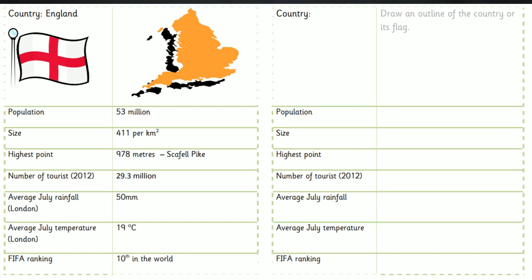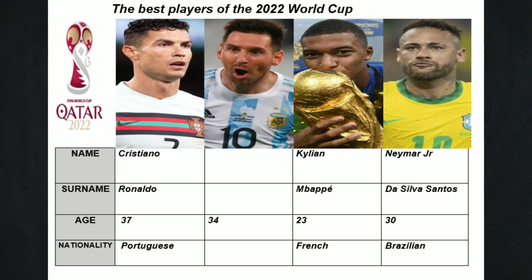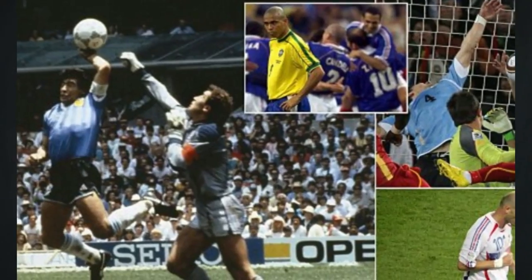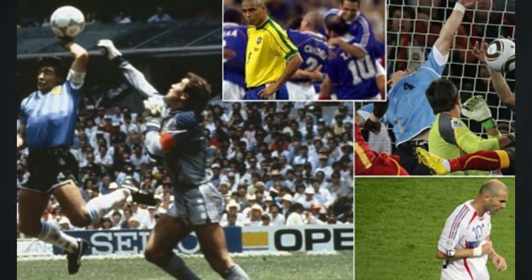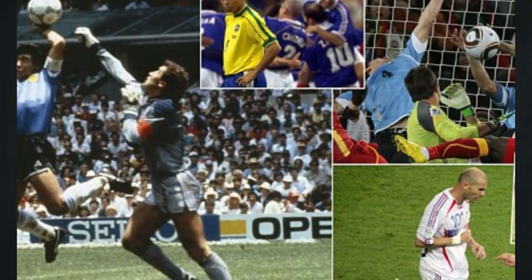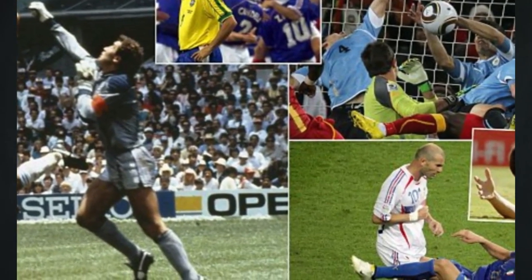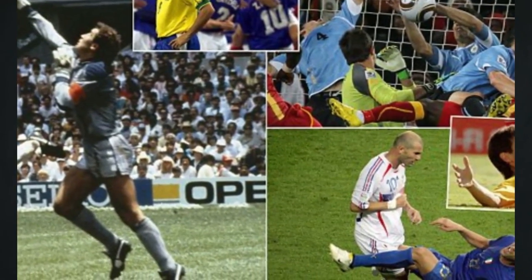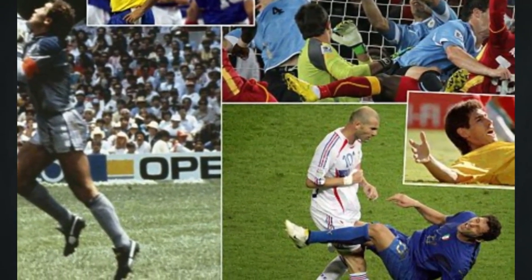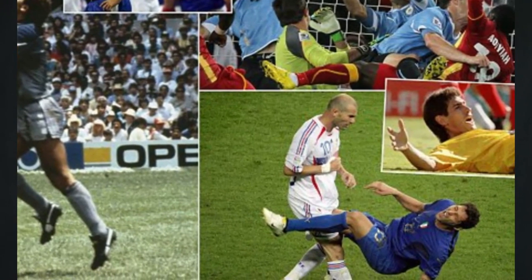Students can then do a presentation on their country — the flag, interesting places, food, language, and famous people. They can also introduce their team's best player. That way your students learn about different countries and gain knowledge in preparation for the World Cup. An idea for more advanced students is to research important events in World Cup history and then do a presentation or speech on one.